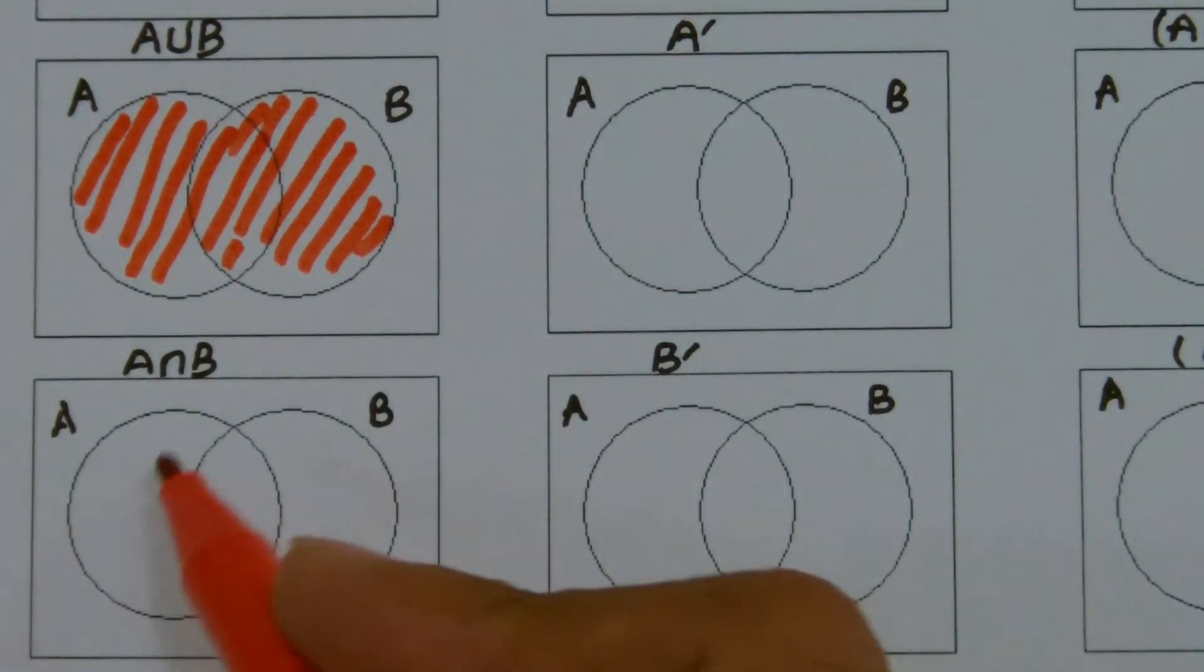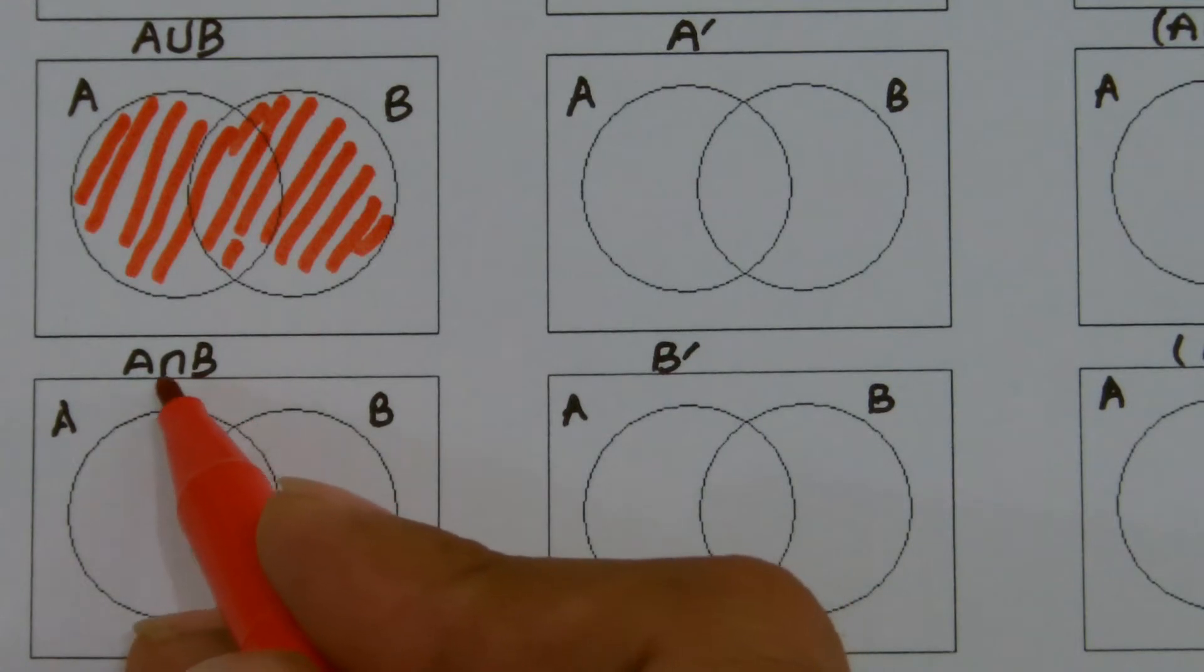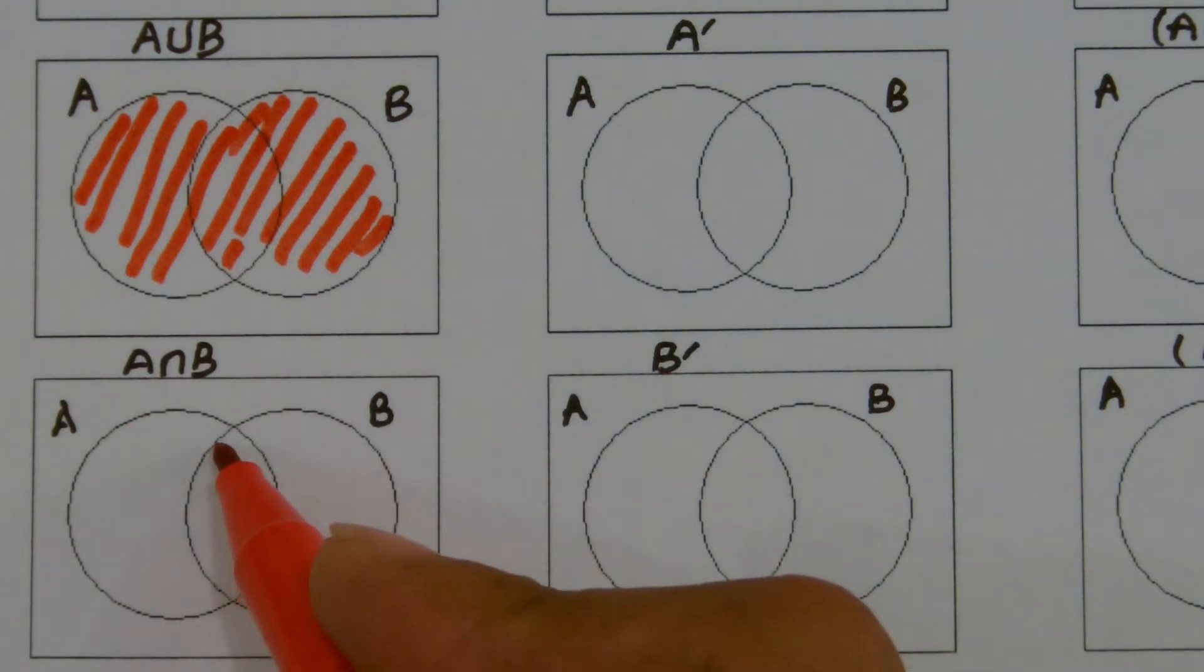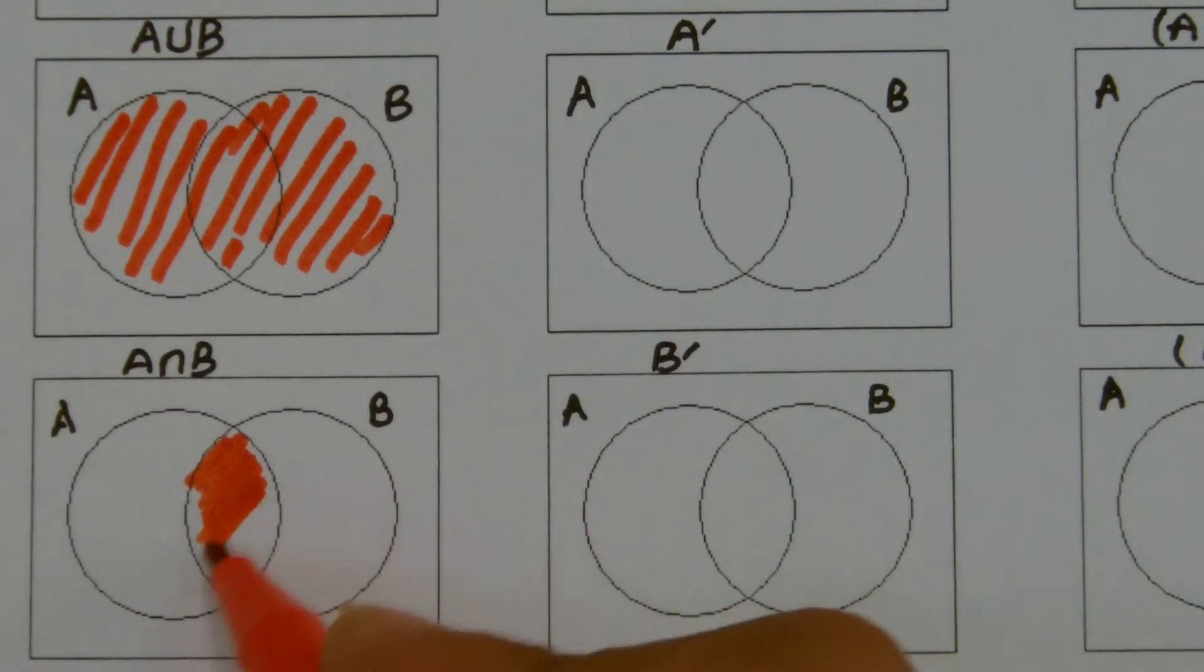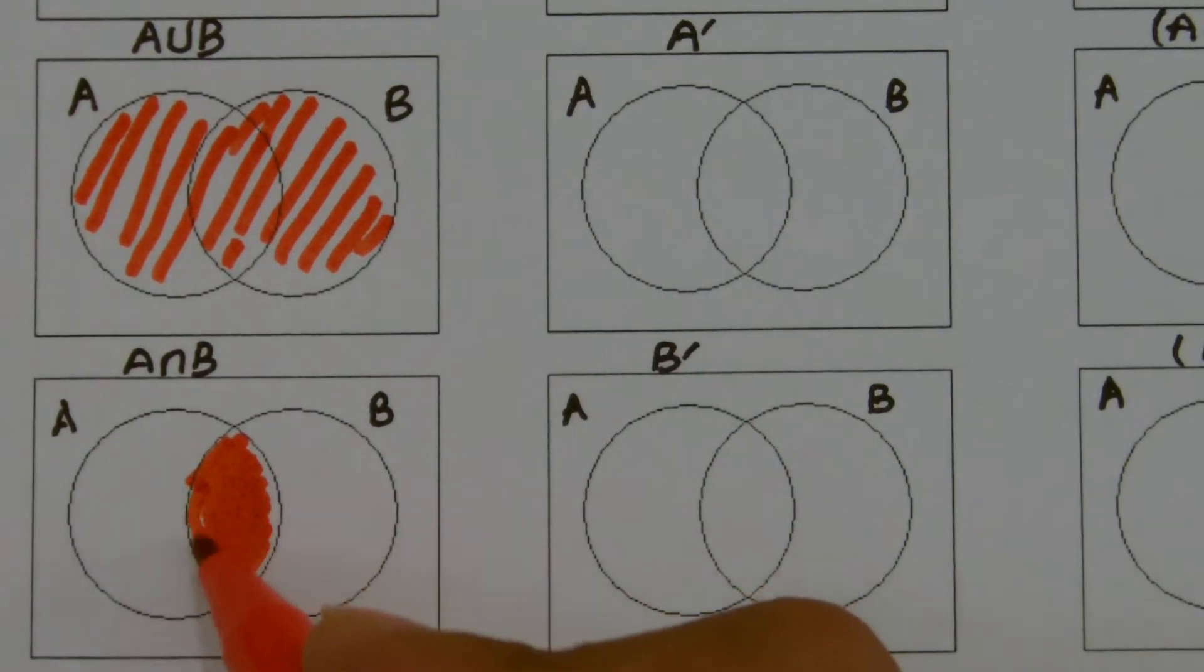Similarly, if I go for A intersection B, then it means everything that is common between A and B. So I would shade the common region, the intersection part, the overlapping part between A and B. That's how I do it.